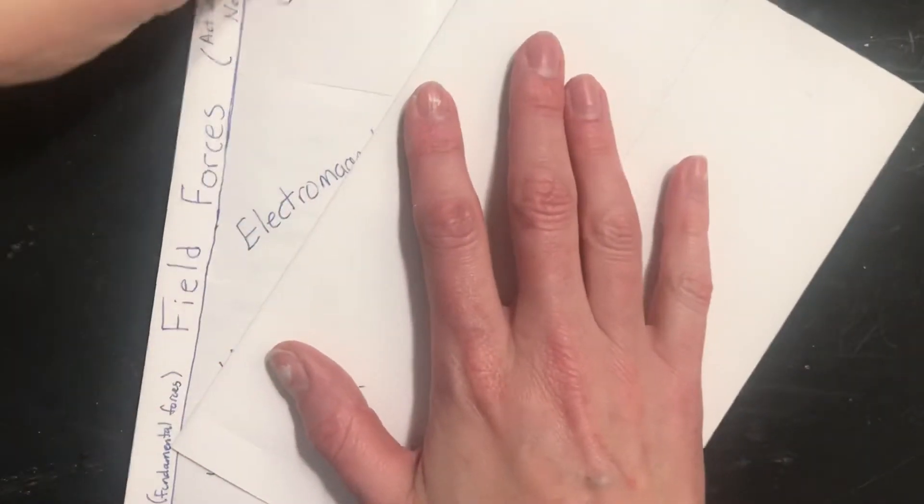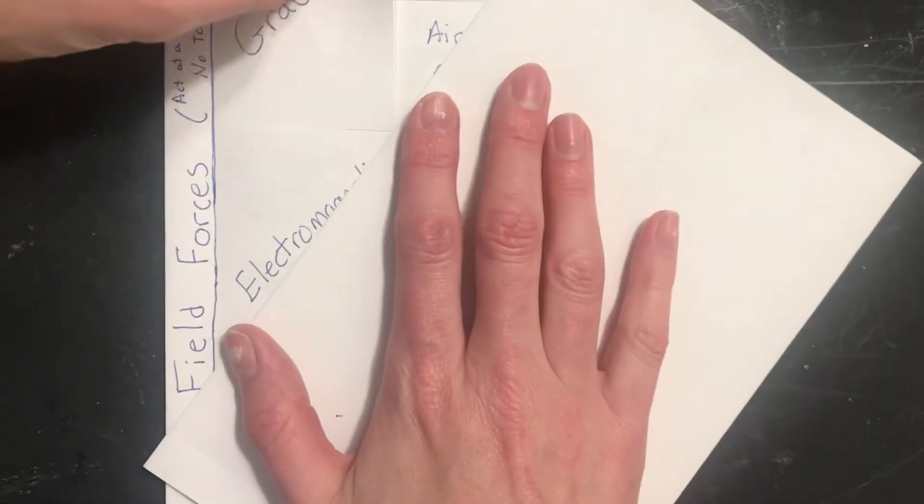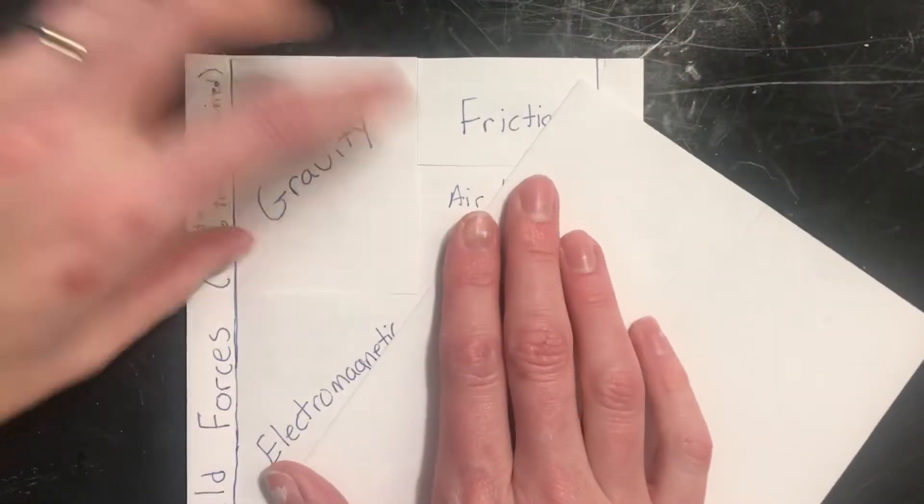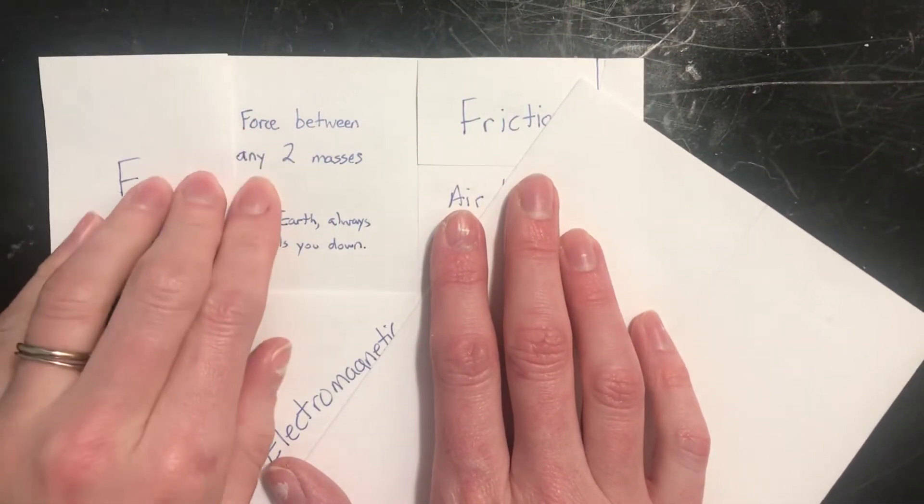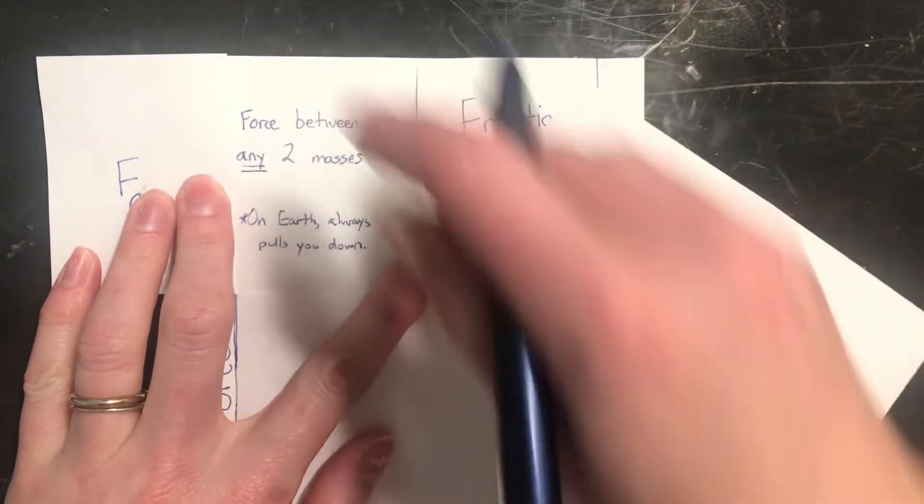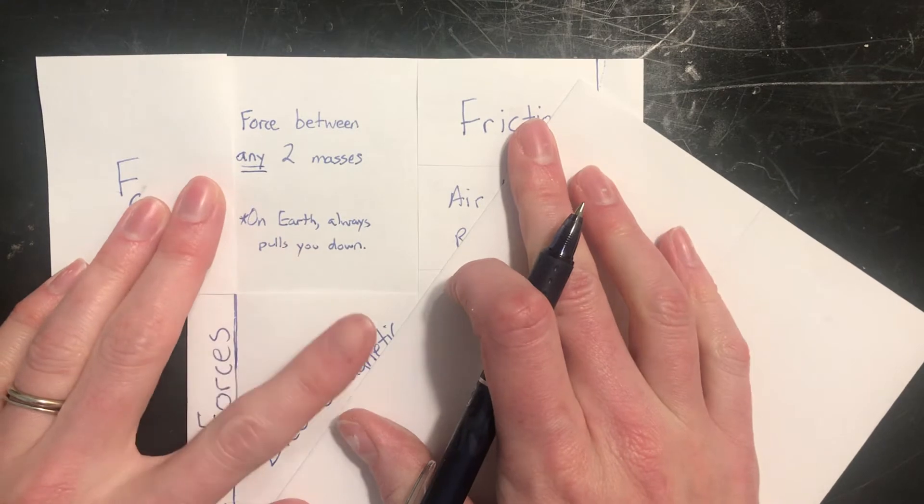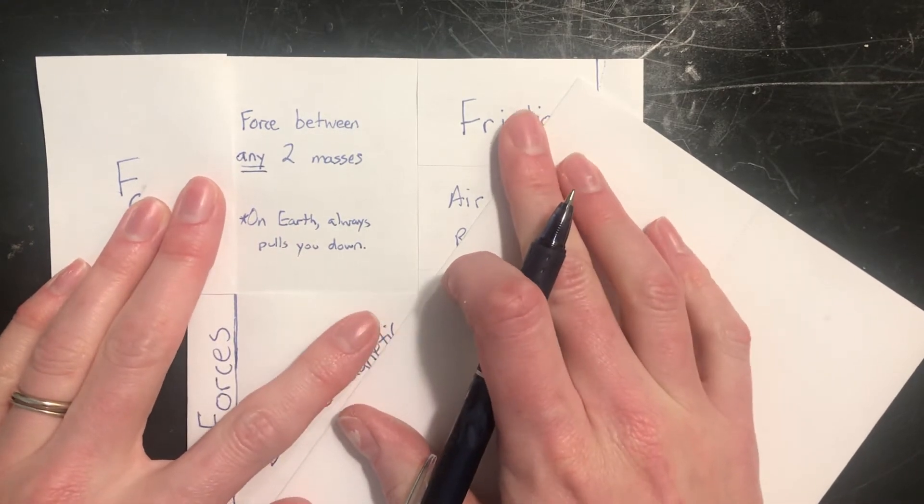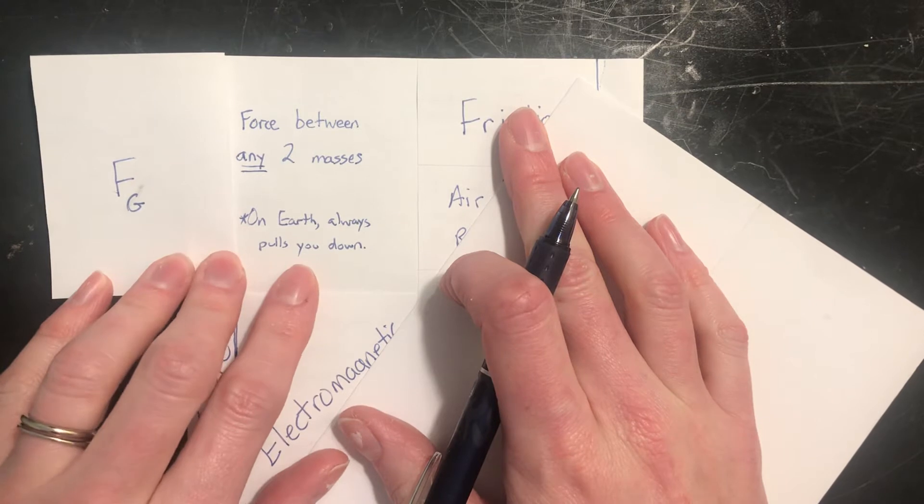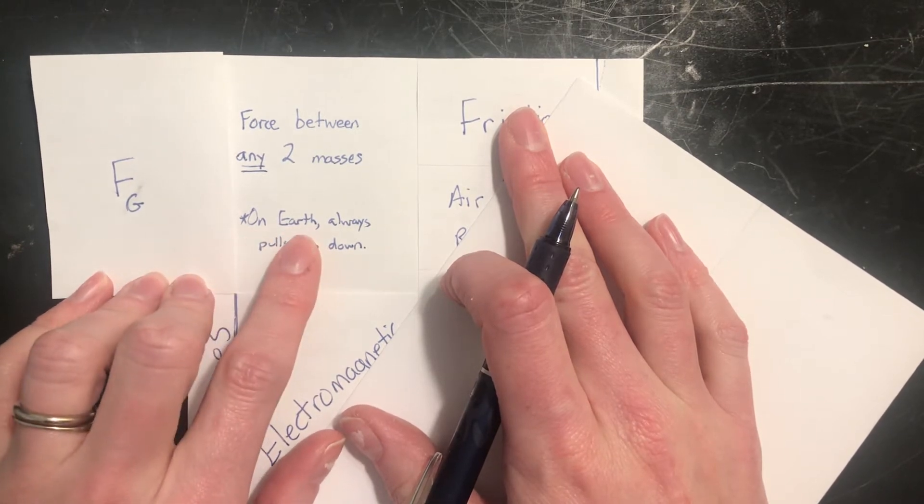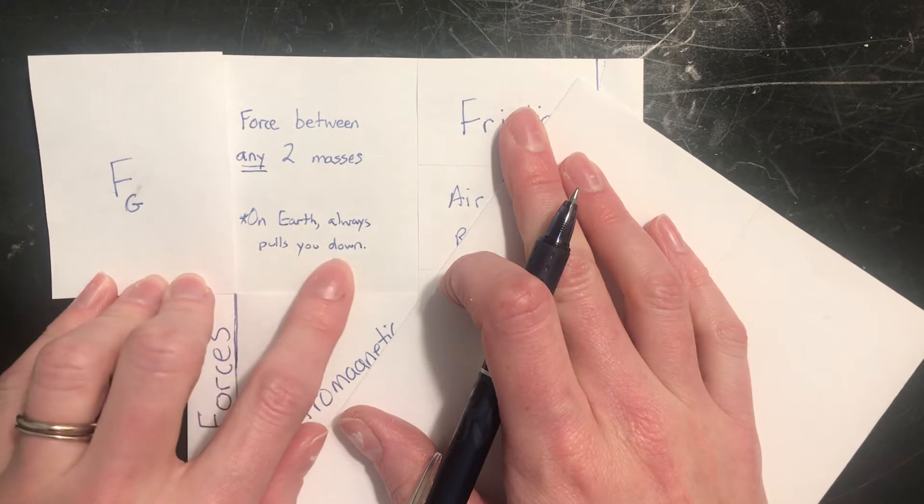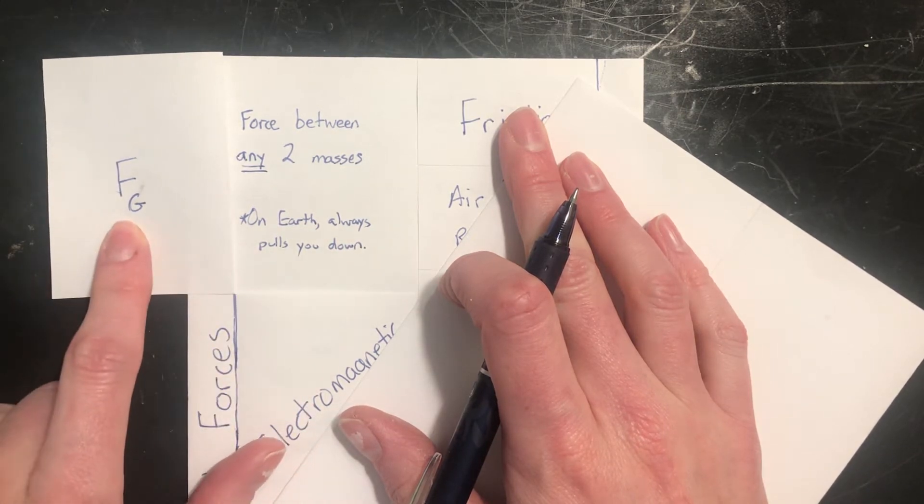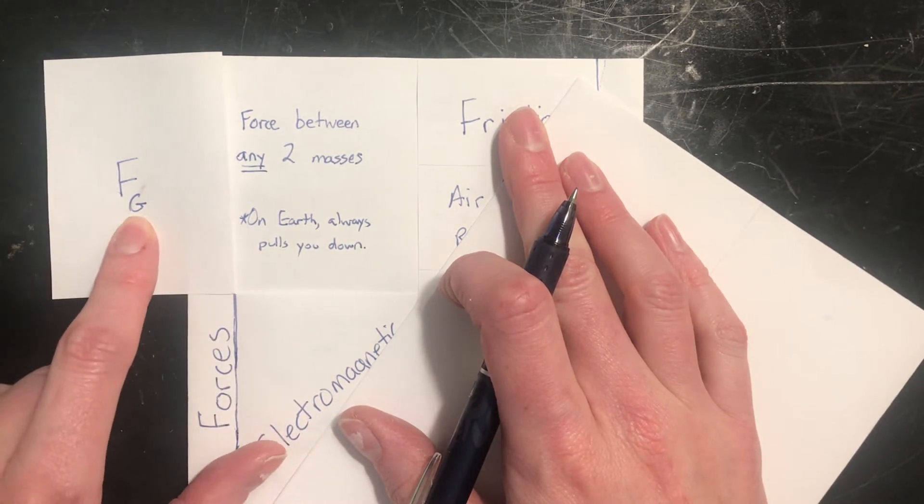Now these flaps, I have them cut now, so we're going to open them up and we're going to put some information on the inside, beginning with gravity. Gravity is a force between any two masses. I'm going to go ahead and go underline any two masses. That means you and me, my dog who just walked in, she's also a mass and I am pulled toward her as well. So on Earth, Earth is the biggest mass around, so we usually only notice it, and they always pull you down. The symbol we use for this force is F with a subscript G for gravity.